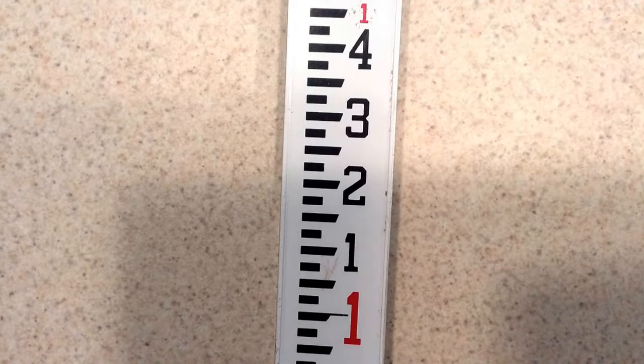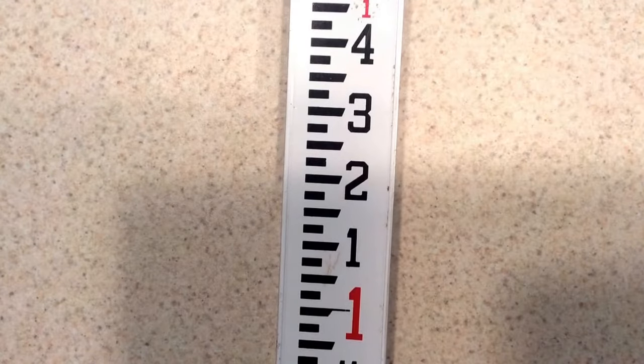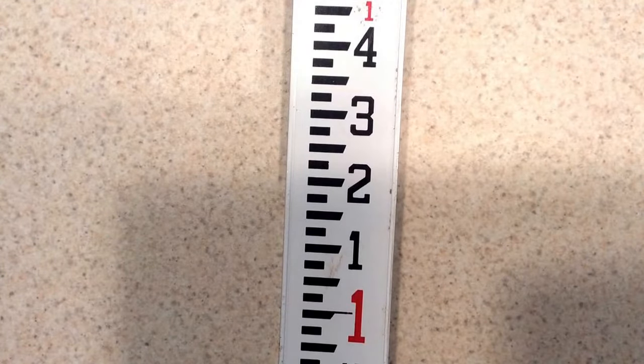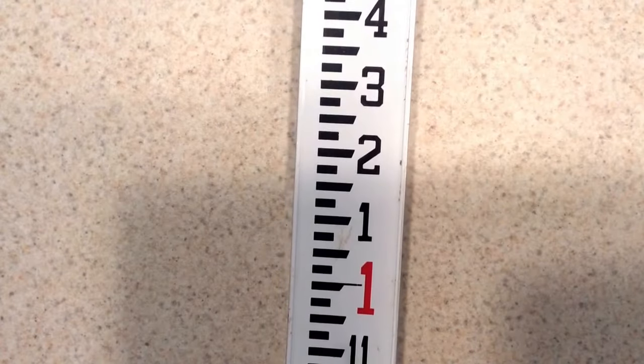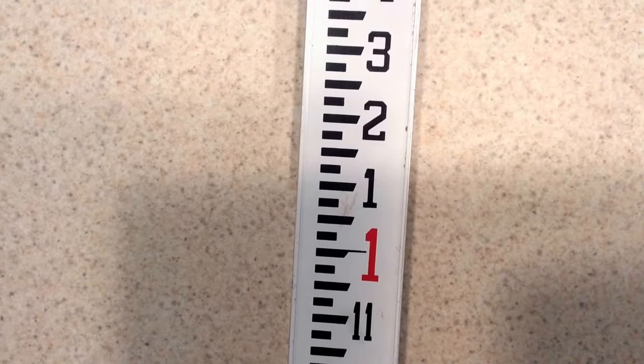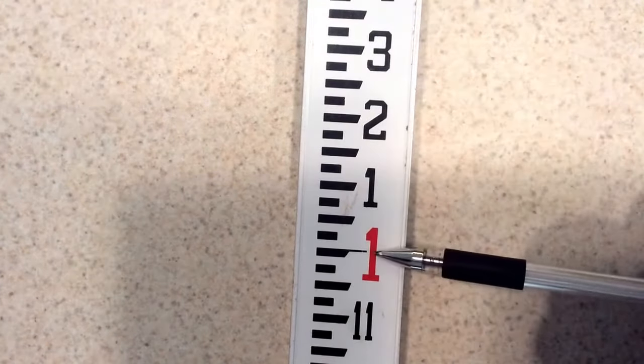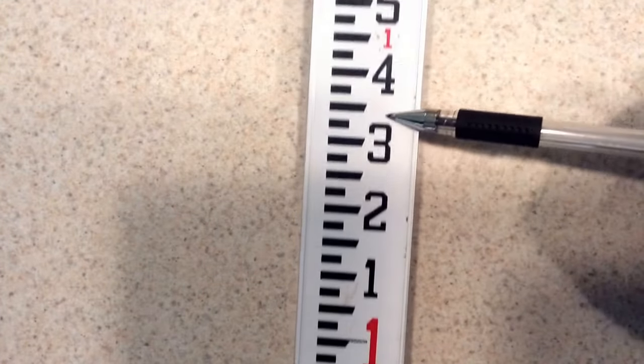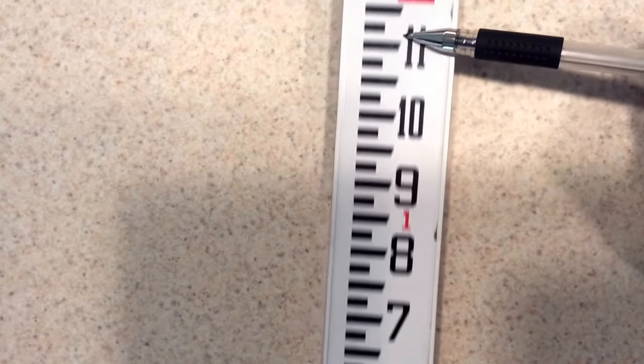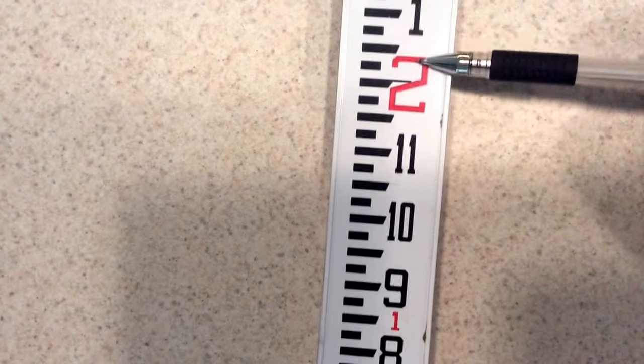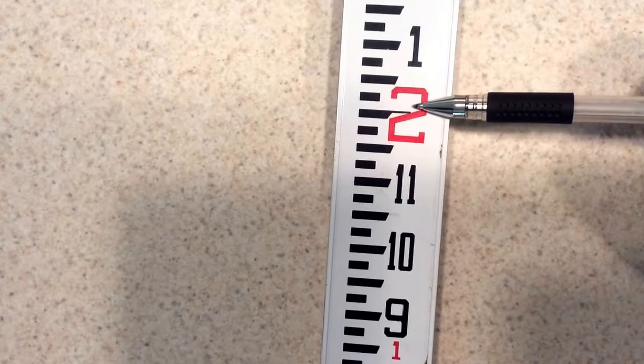The thing you really need to do is learn how to read this when you're looking through your transit. Here we see a bunch of numbers, a red number 1, followed by 1 through 11, and then we have a red number 2.